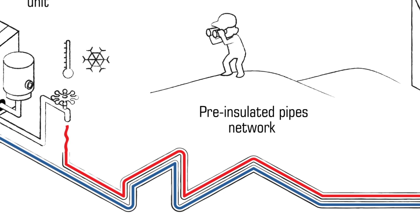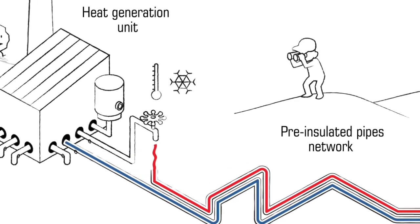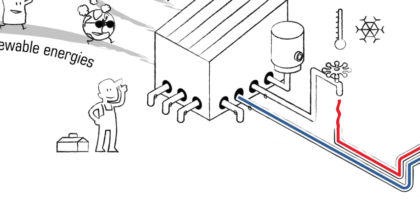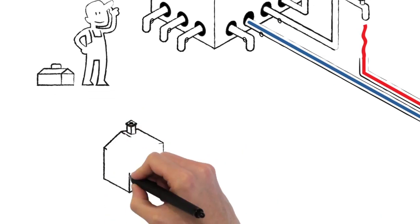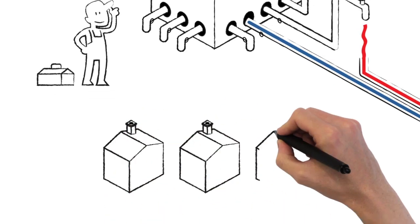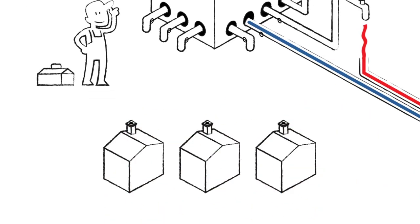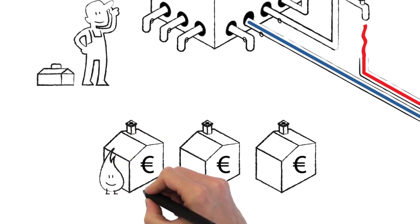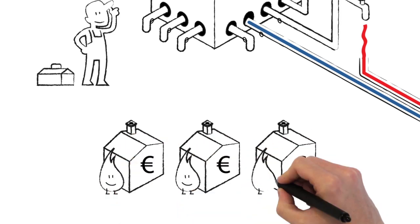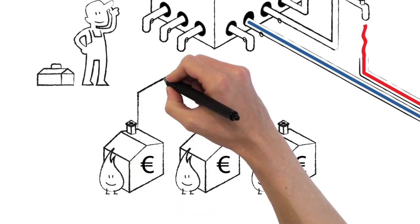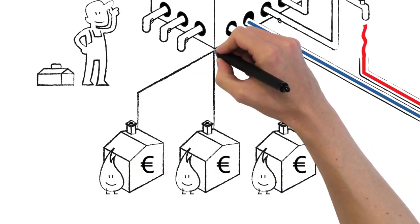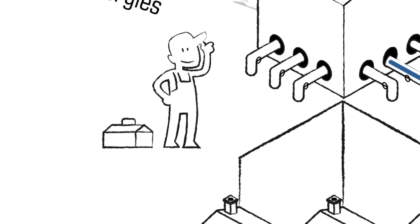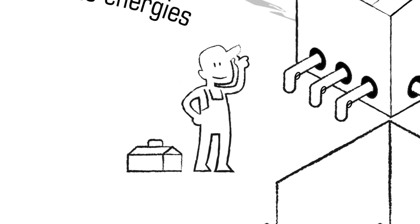Economical advantages: just one boiler replaces several collective or individual boilers. In fact, costs are reduced because the purchase of equipment and of energy is shared, and management of the network is made simple, as it is done only on one equipment.